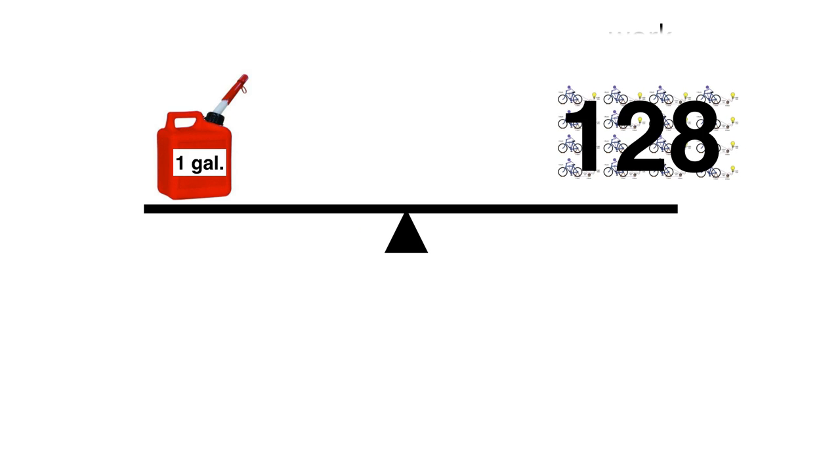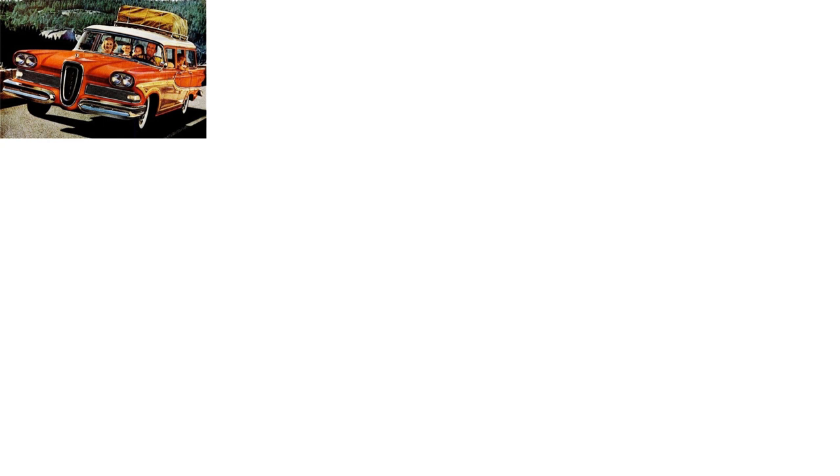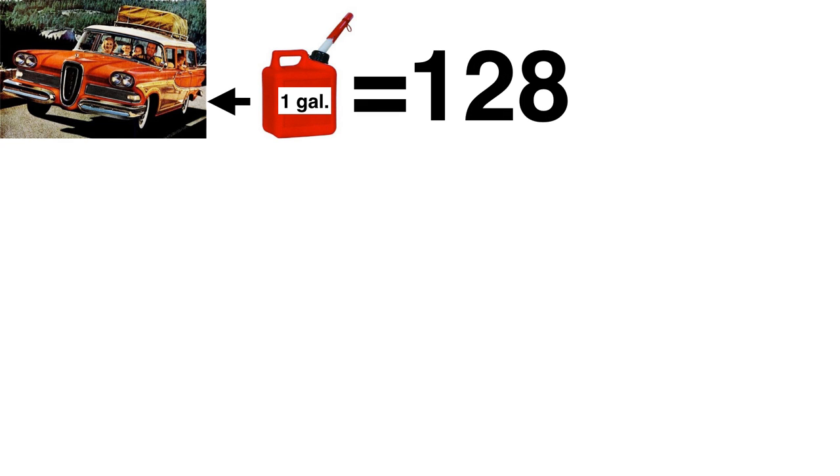And since the work of 128 laborers equals the work of a gallon of gas and a gallon of gas costs $4, then each person would have to be willing to do the 30 minutes of work for $0.03. It follows that, in a fossil-fueled civilization, human labor has a value of $0.06 an hour. This means that when you drive a car powered by gasoline, each of us uses 128 very cheap energy slaves.